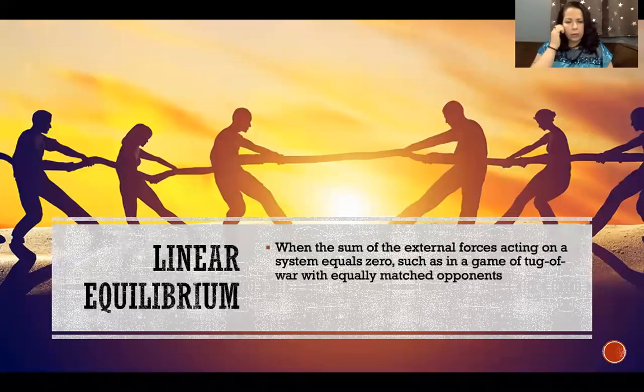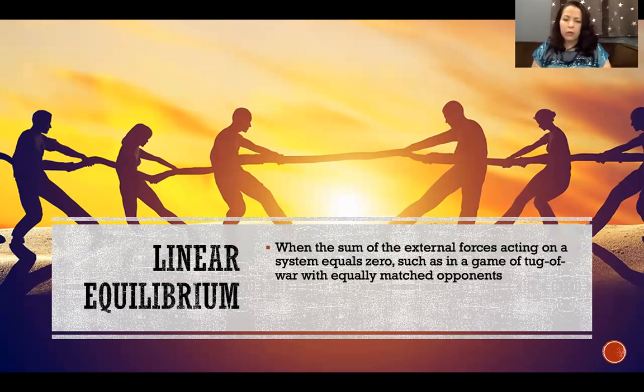Linear equilibrium is when the sum of external forces acting on a system equals zero, such as in a game of tug-of-war with equally matched opponents. This is linear equilibrium because all of the forces applied when pulling on the rope are happening in a collinear direction.